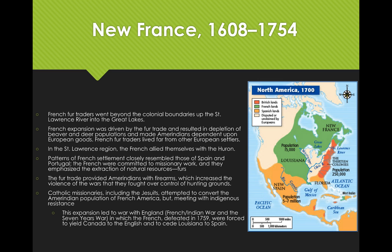The French expanded aggressively to the west and the south, establishing a second fur trading colony in Louisiana in 1699. This expansion led to a war with England, known as the French and Indian War and the Seven Years' War, in which the French were defeated in 1759 and were forced to yield Canada to the English and to cede Louisiana to Spain.